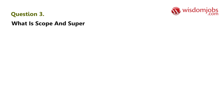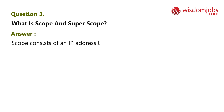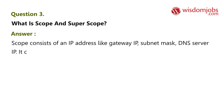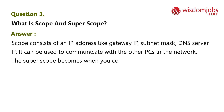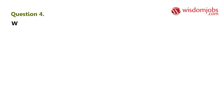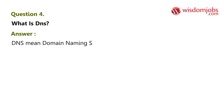It helps in managing a large number of IPs very easily. Question 3: What is scope and super scope? Scope consists of an IP address like gateway IP, subnet mask, and DNS server IP. It can be used to communicate with other PCs in the network. Super scope is created when you combine two or more scopes together.